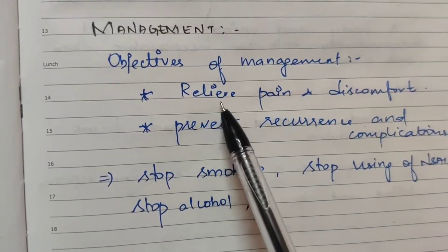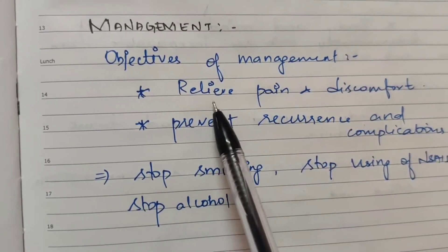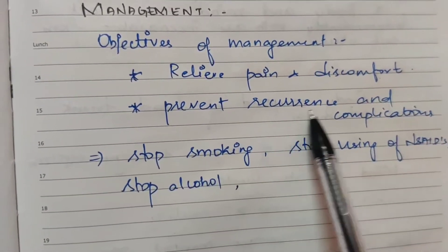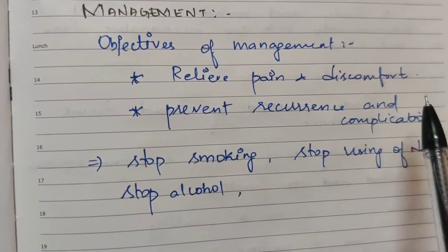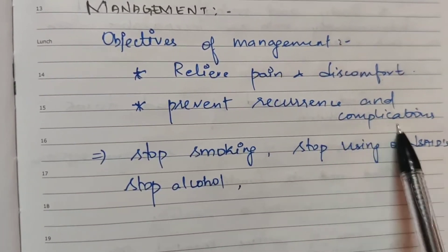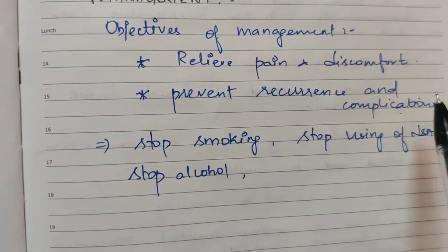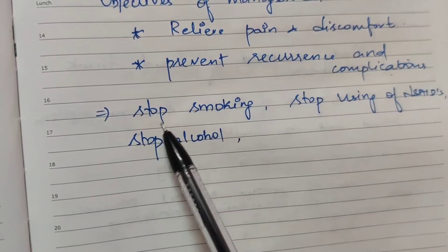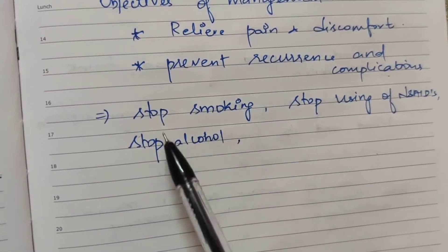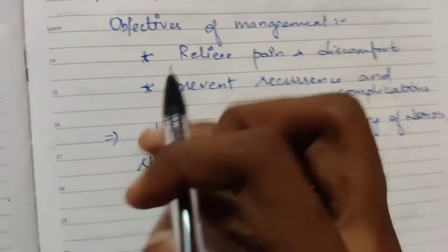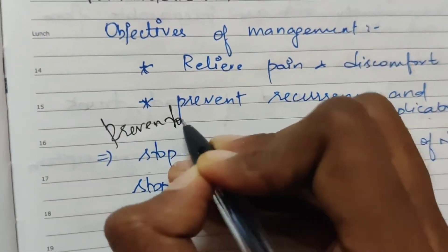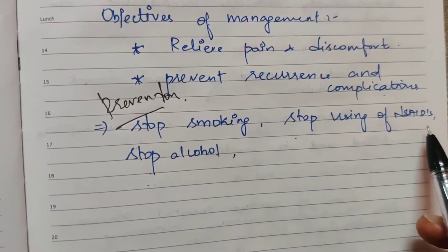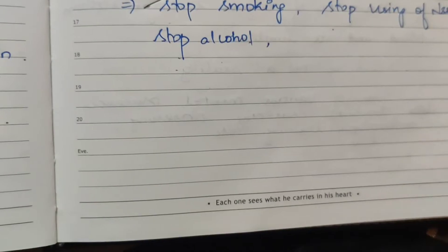The objectives of management are to relieve pain and discomfort, prevent reoccurrence and complications, and in case of complications, manage them. Risk factors to address include smoking and alcohol use — stop smoking, stop taking alcohol, and stop using NSAIDs.